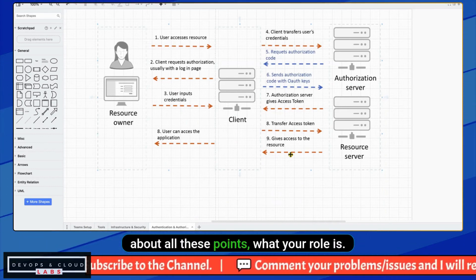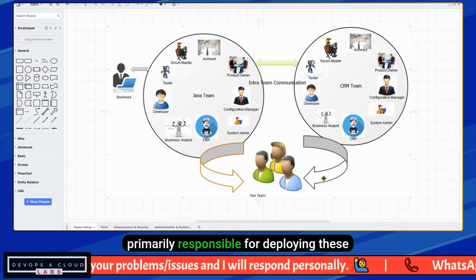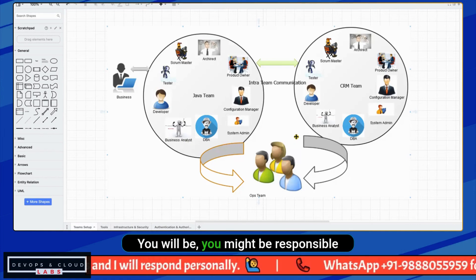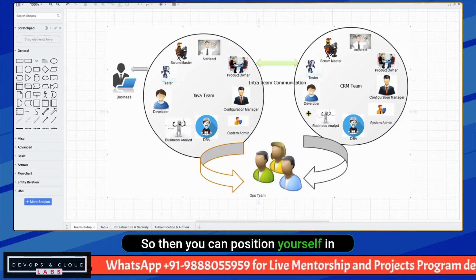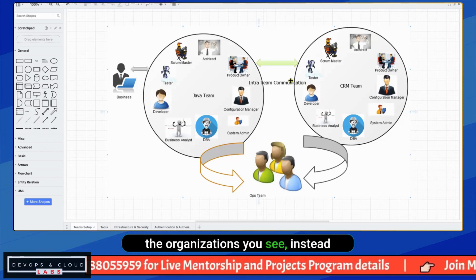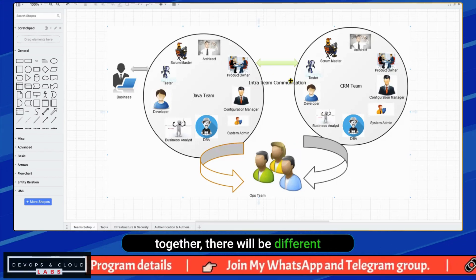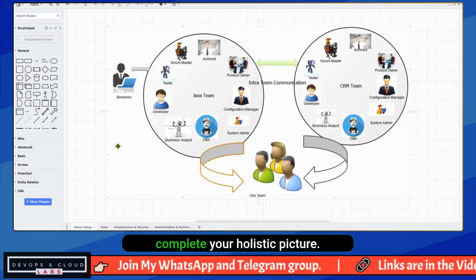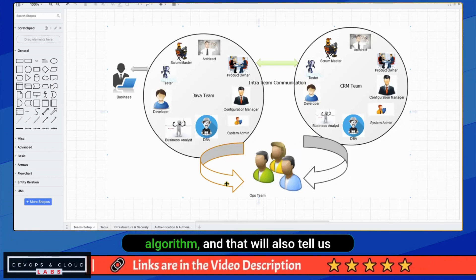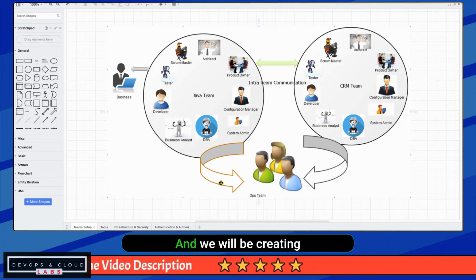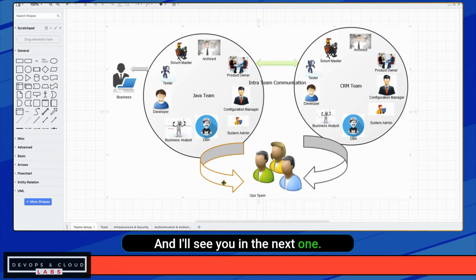So to recap: you now have an understanding of the whole team setup, the tools you will be using, the infrastructure and security components, and how authentication and authorization behaves. Keep in mind your role whenever discussing these points — as part of a centralized DevOps team, you handle multiple applications and are primarily responsible for deploying them into different environments, managing applications in production, and creating alerting and monitoring. In most organizations, there will be different applications interacting together and different teams working on them — that completes your holistic picture. I hope this video helps. Press the like button if you found it useful, and I'll see you in the next one. Cheers.